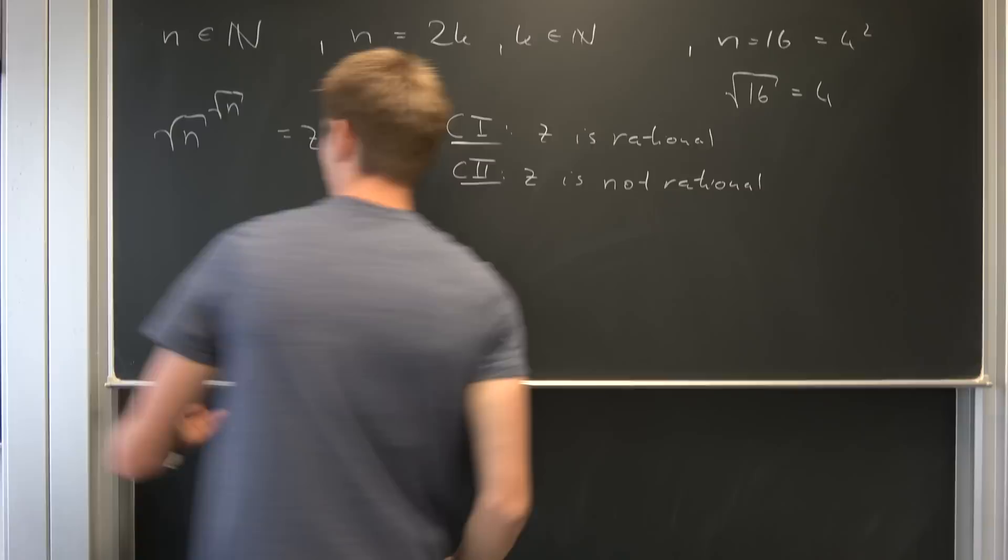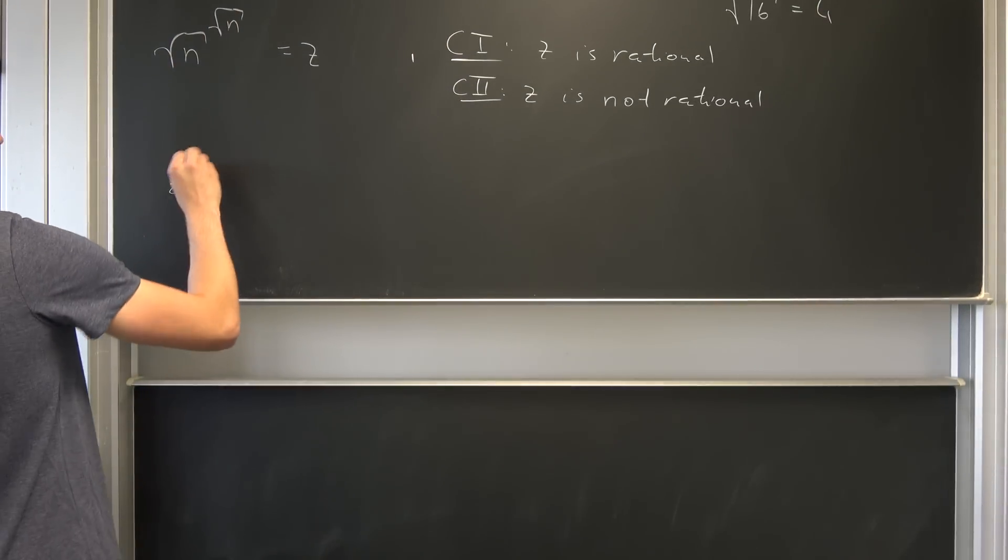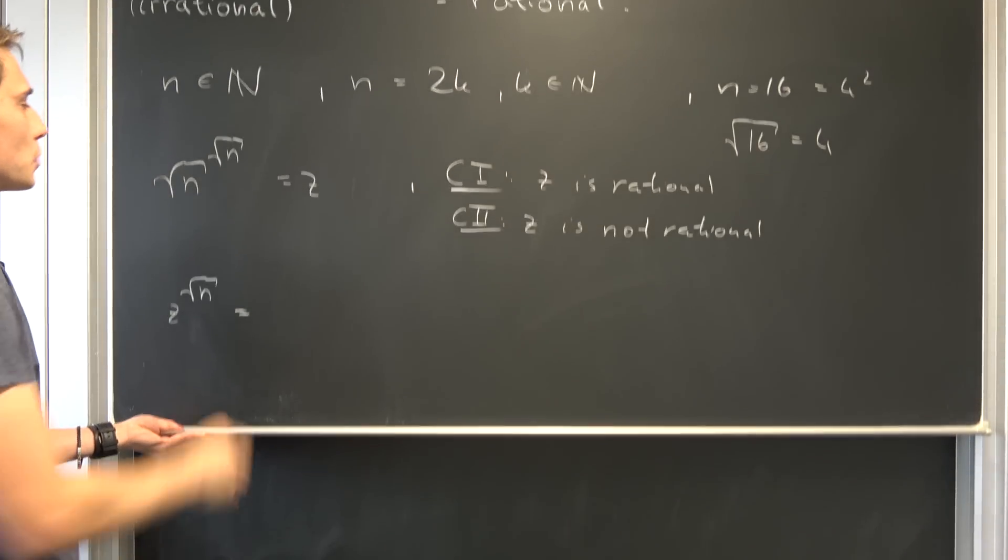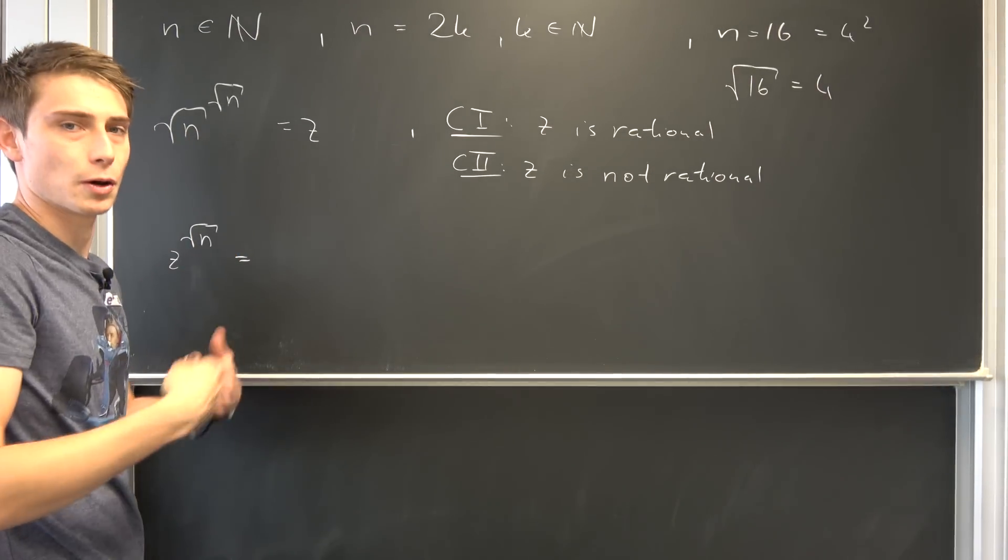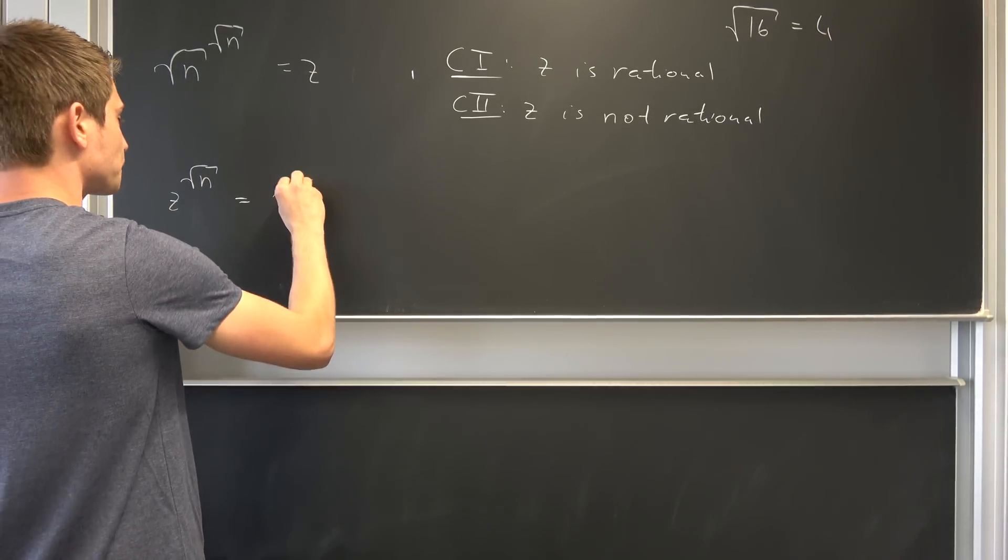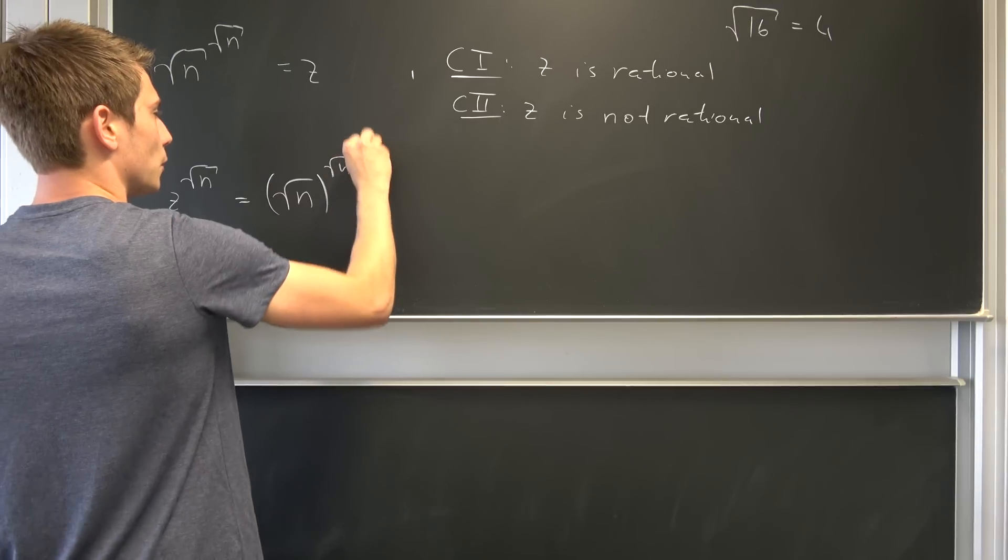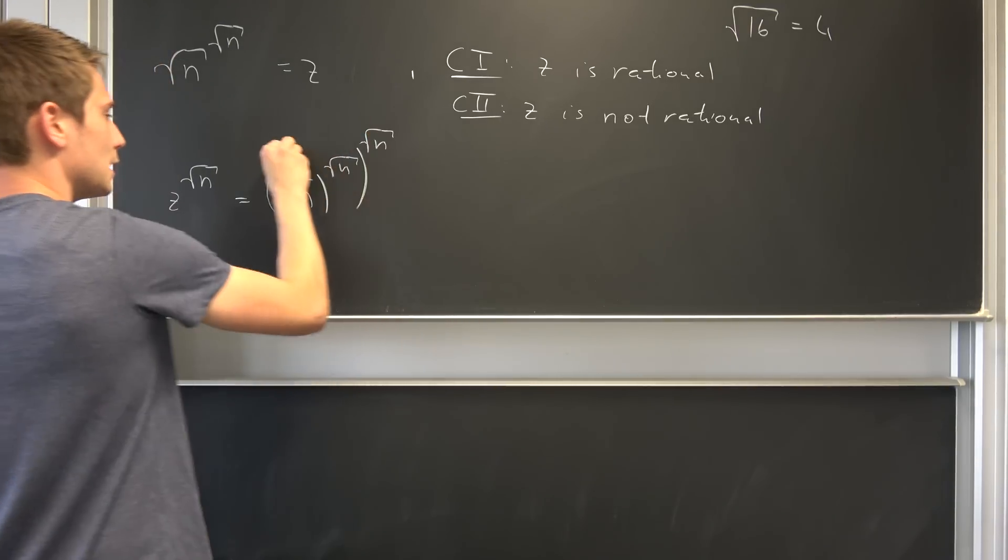And we will see what we get. So what happens if we raise z to the power of square root of n? Well, that's nothing but saying we raise square root of n to the power of square root of n, to the power of square root of n. Let's put it here to the power of square root of n.